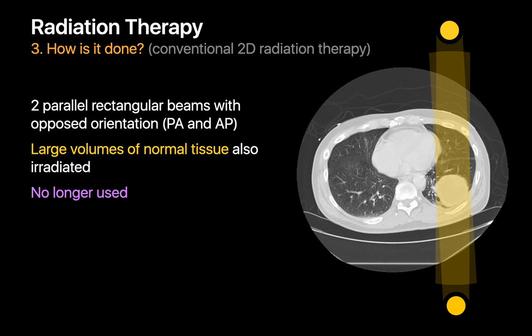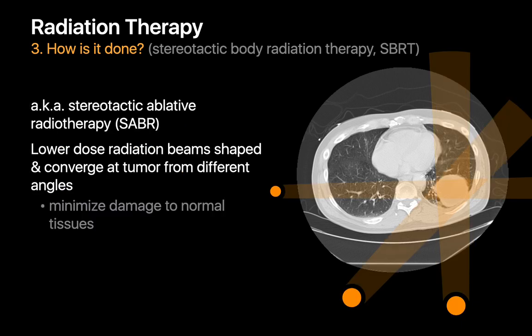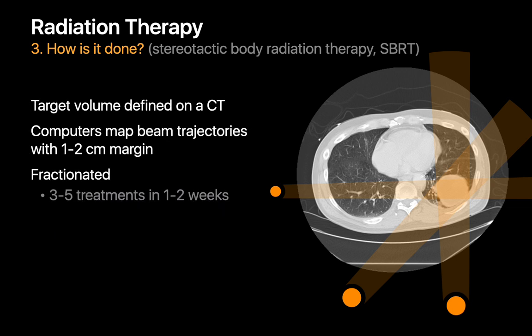Techniques currently used include stereotactic body radiation therapy (SBRT), also known as stereotactic ablative radiotherapy (SABR). With SBRT, multiple low-energy x-ray beams are shaped and converge on the lung cancer from different angles three-dimensionally, substantially reducing damage to normal tissues while delivering sufficient ionizing radiation to treat the cancer. A chest CT is required to define a three-dimensional target volume, computers map the required beam trajectories, and the radiation dose is fractionated and delivered as three to five treatments over a one to two-week period.